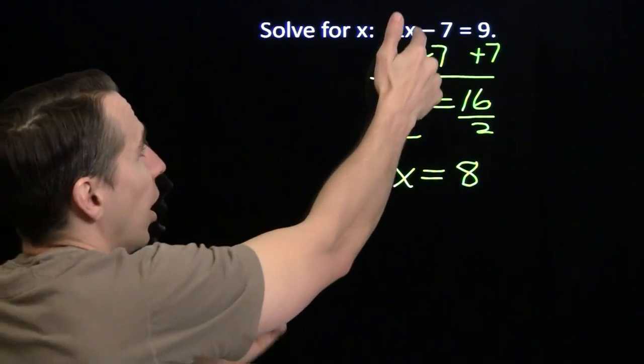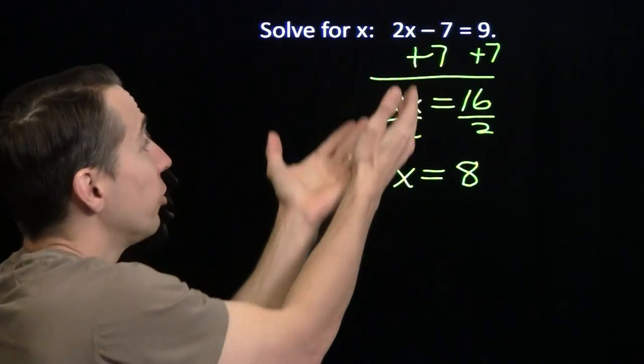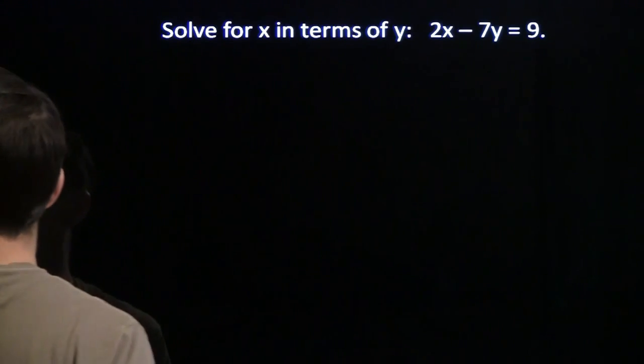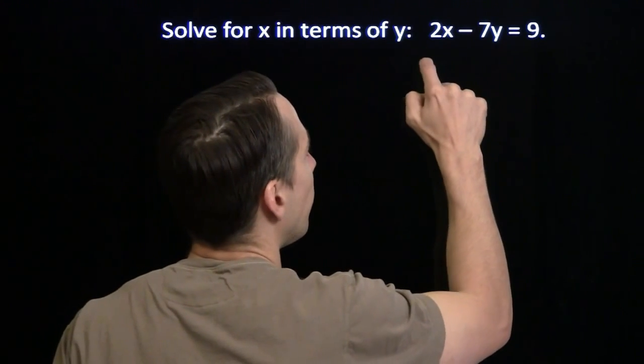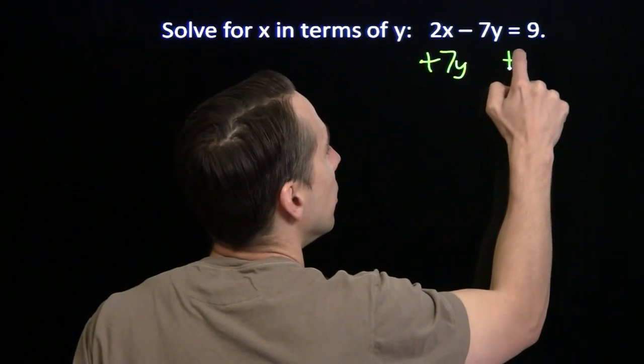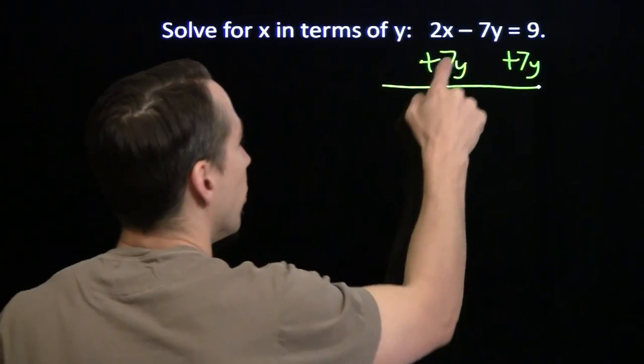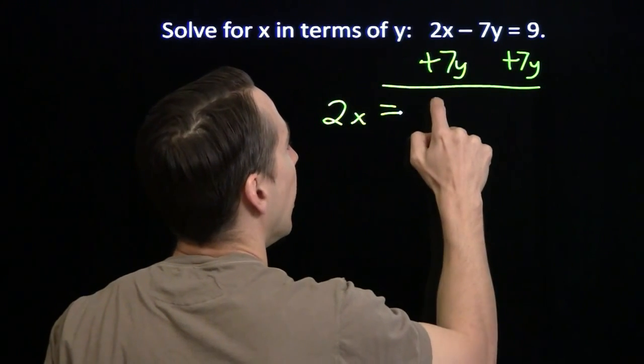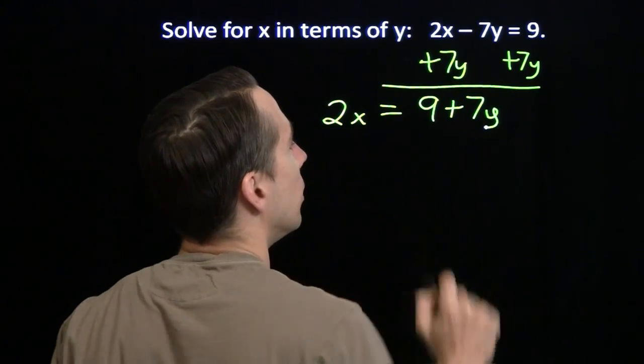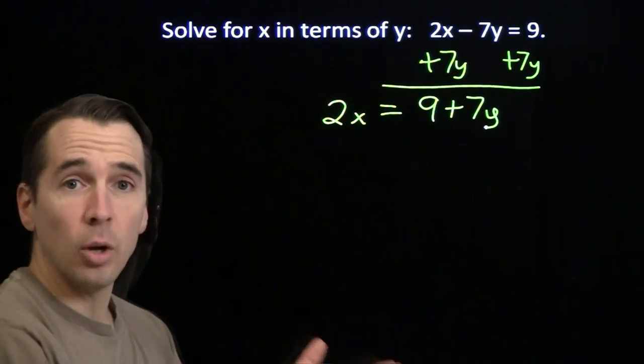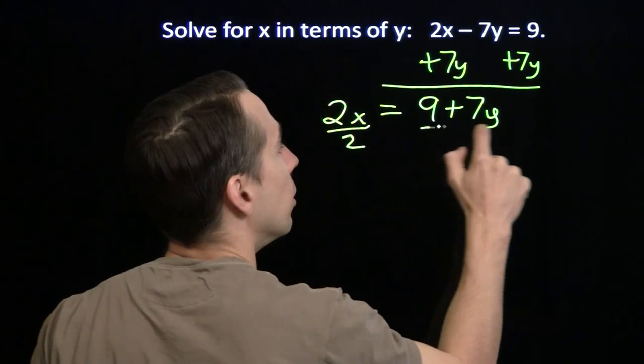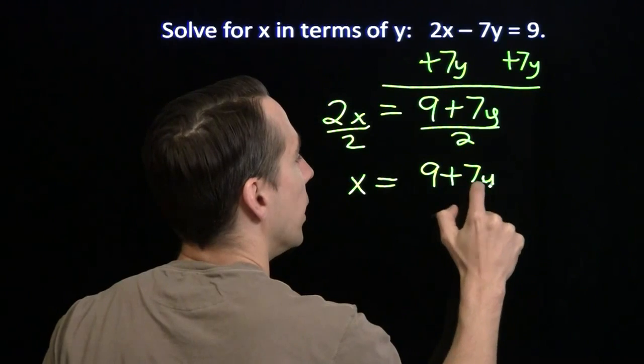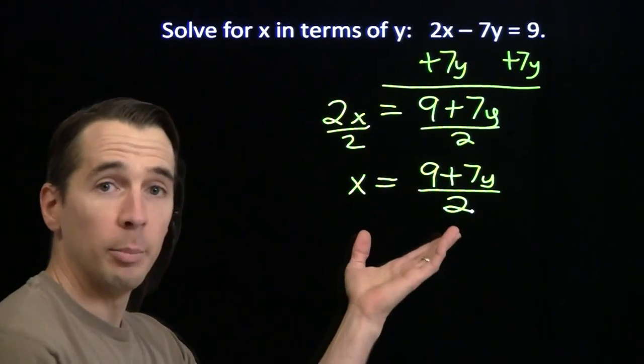Now here, our first step was to isolate the 2x, isolate the part of the equation that has x. We do the same thing here. There's nothing new here. You already know how to do this. We'll start off by adding 7y to both sides. And that gives us, the 7y's cancel, and over on the left we have 2x. And over on the right side, we have 9 plus 7y. And then we need to get the x all by itself. We divide both sides by 2. And we have x equals 9 plus 7y, all of that divided by 2.